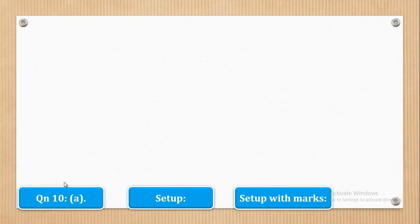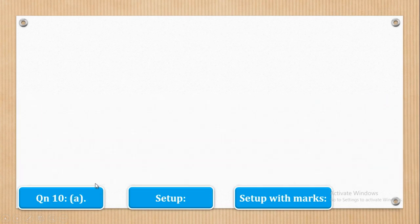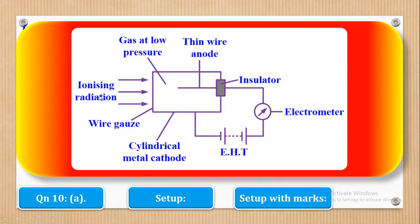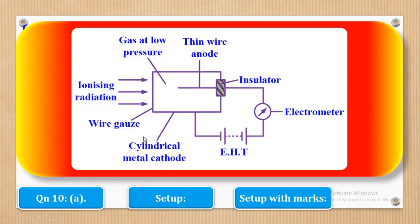So now we shall go to question 10 part C. Part C says that with the aid of a labeled diagram, describe the action of an ionization chamber. So first of all you have to draw the setup of an ionization chamber in this way, so well labeled. The diagram should be well large enough. So they have told us that with the aid of a diagram, meaning that the diagram has to be drawn. And this will be the diagram of the ionization chamber.